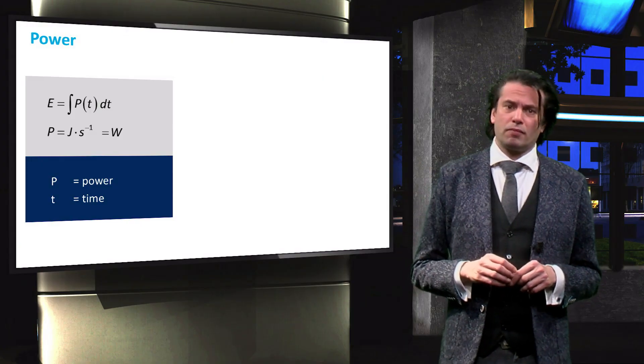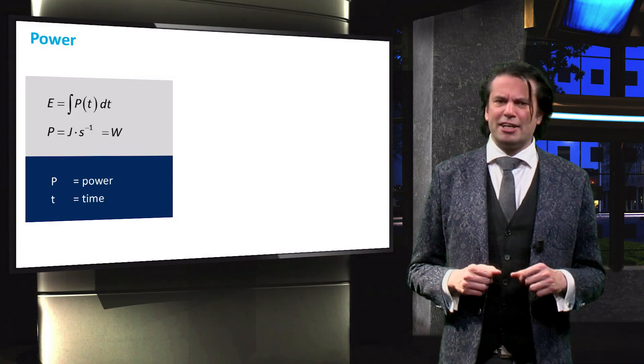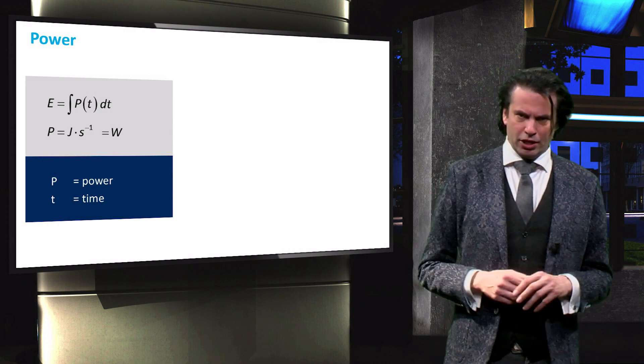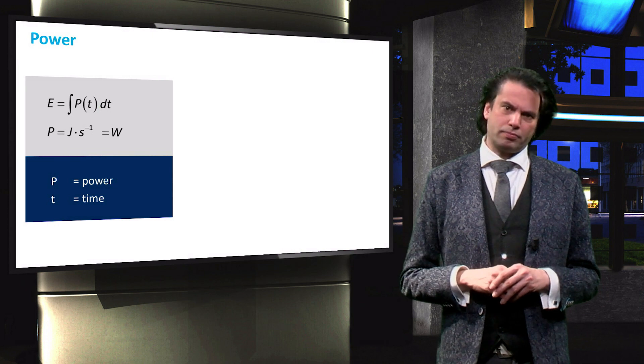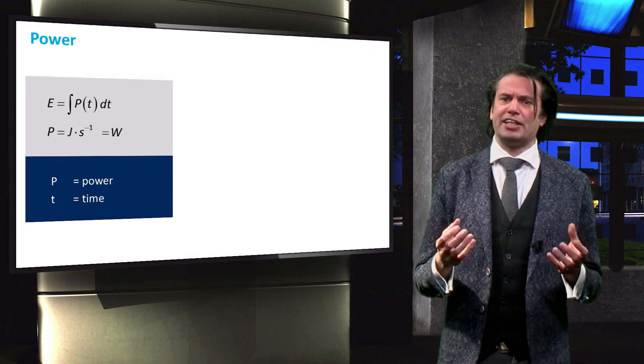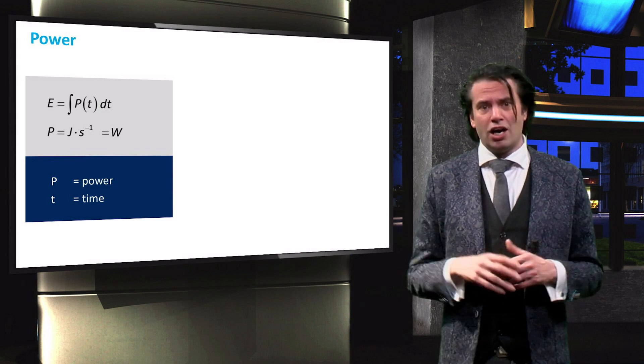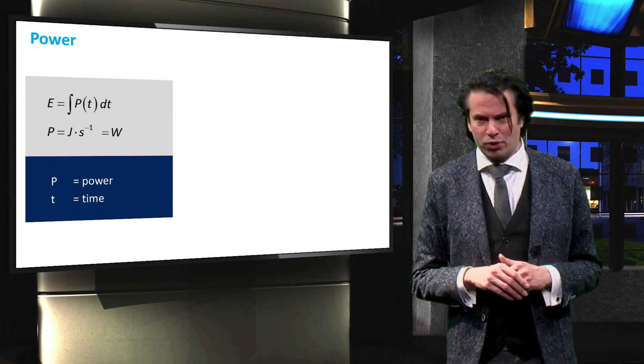Now on to power. The power P is defined as the amount of energy used per unit time, denoted by T. Power is therefore expressed in joules per second. One joule per second is also known as a watt after Scottish engineer James Watt.